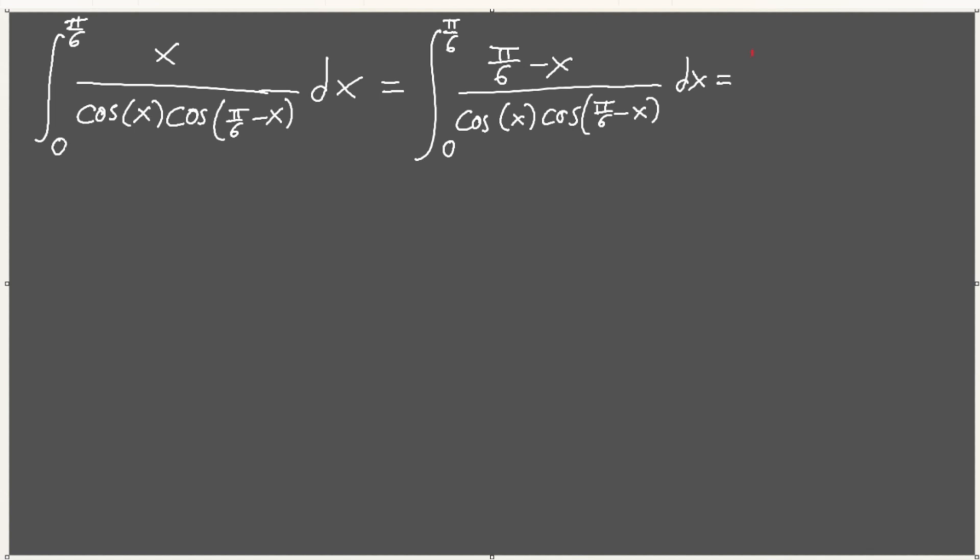And then if we add it together, right? If we add it together, I'm just going to have a half for now, just to shorten the process. When we add it together, when we add these two integrals together, the x cancels out. x minus x plus pi over 6, x minus x. Okay. So this is what we have.